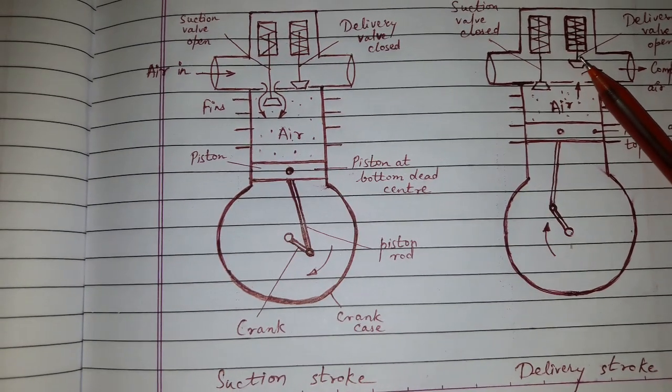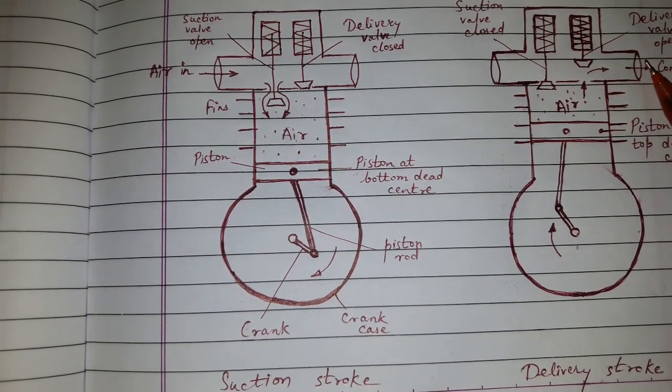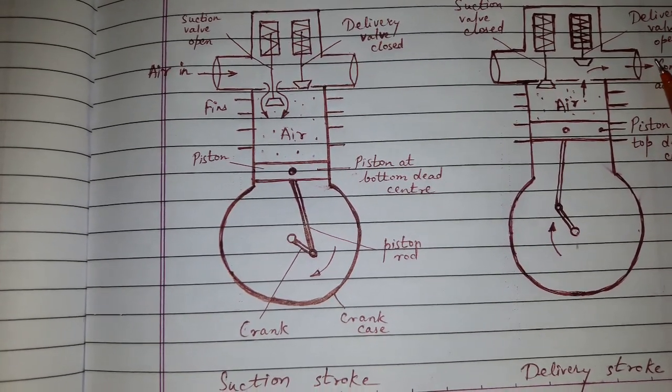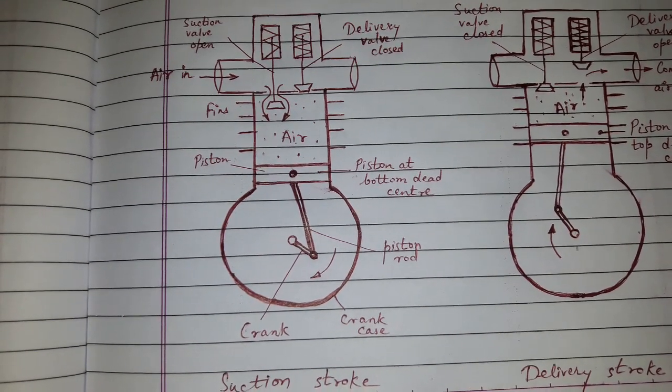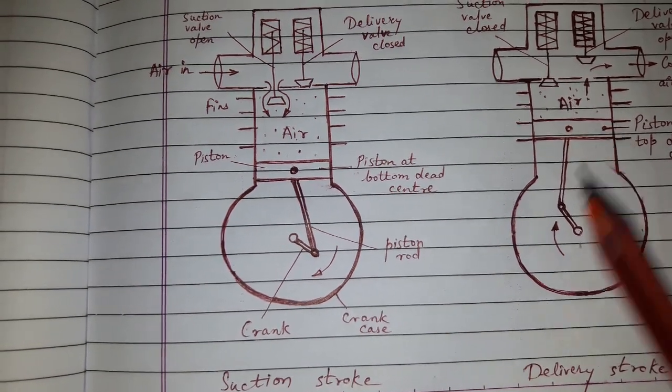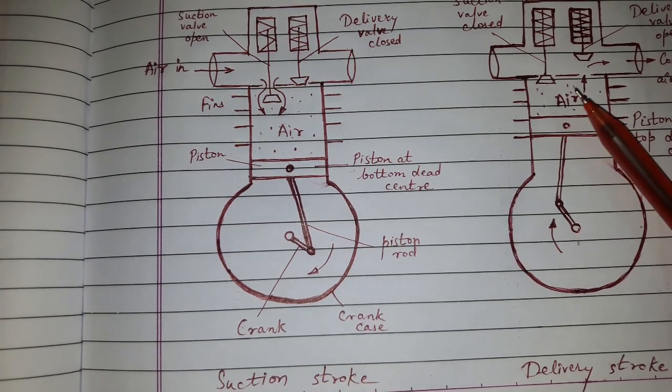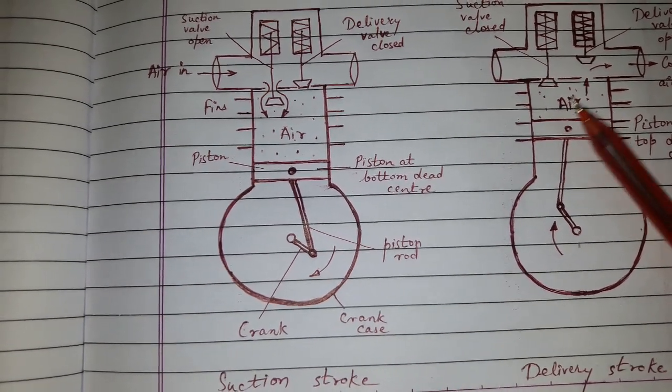The compressed air moves out of the delivery port and goes to the air receiver. In this compressor, compression of air takes place on one side of the piston only.